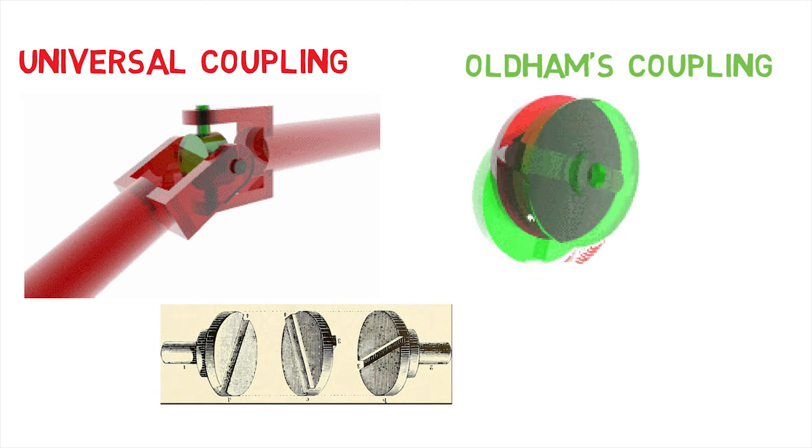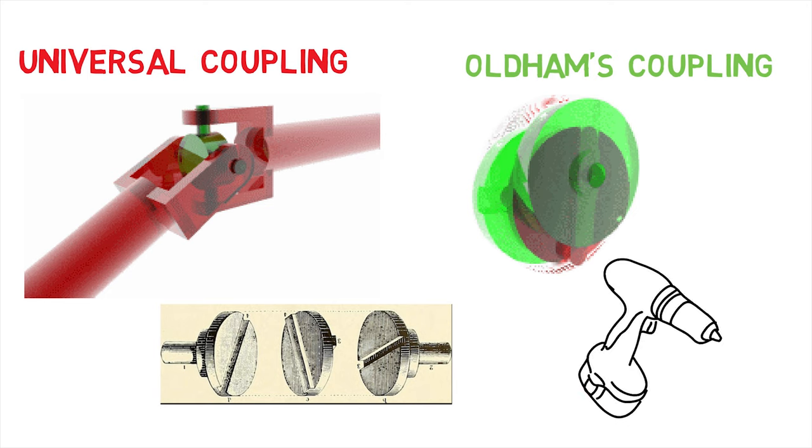The middle disc rotates around the center at the same speed as the input and output shafts. The center traces a circular orbit twice per rotation around the midpoint between input and output shafts. An advantage to this type of coupling as compared to two universal joints is its compact size.